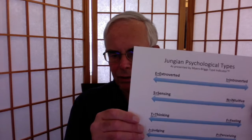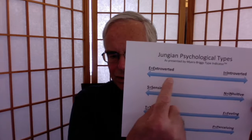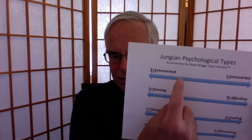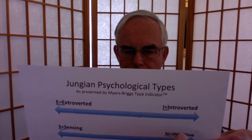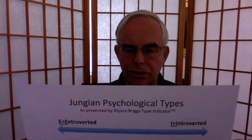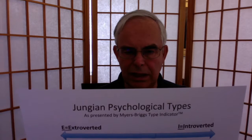The Myers-Briggs Type Indicator is based on four dualities. Everyone in the world falls somewhere in each of these spectra. Everyone is either extroverted or introverted, everyone is sensing or intuitive, and you fall somewhere on each scale — you might be extremely introverted or extremely extroverted. Where you fall on these scales determines which letters apply to your situation. In my case I am INTP, which means I'm introverted, intuitive, a thinking person, and a perceiving person.